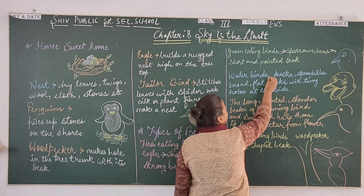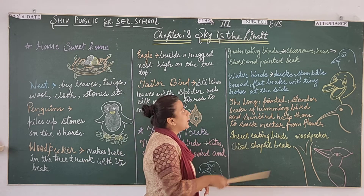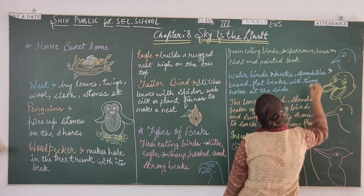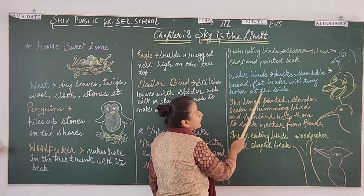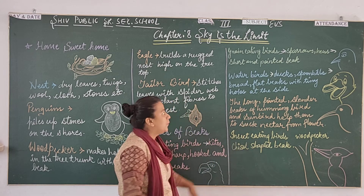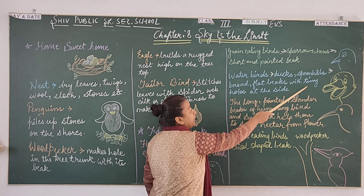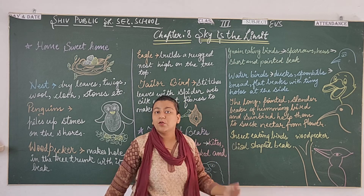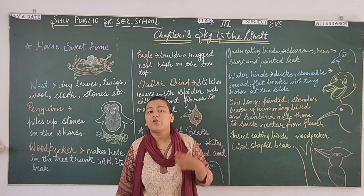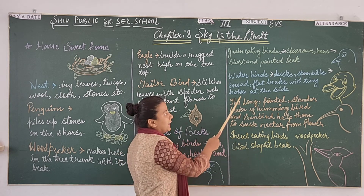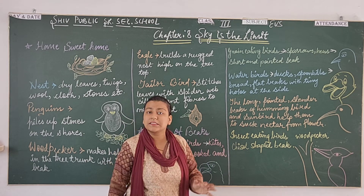Next, water birds. Water birds include duck and spoonbill as examples. How does their beak work? They have flat, broad beaks with tiny holes at the side. The holes in the beak help filter water so the bird can catch insects and worms.